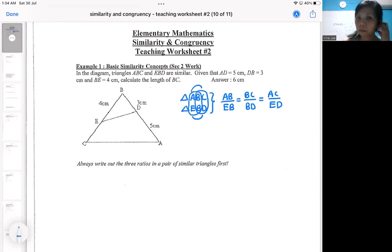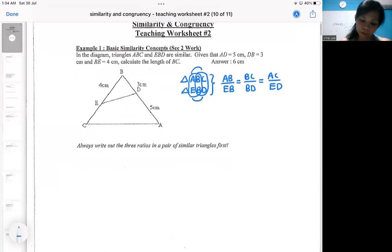So write out the ratio, okay, so you can see. Then you try to fill in the ratio with the length that is provided to you. So hopefully you can find BC. The question is asking you to find BC. So write out the ratio, fill in the numbers.